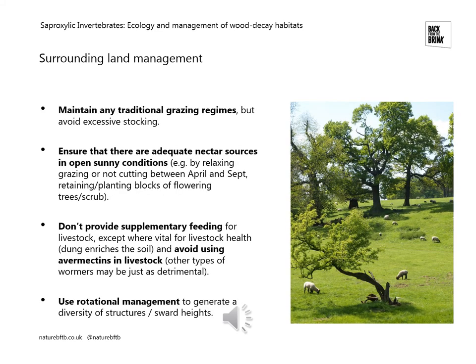Where a site has a long history of grazing — whether by sheep, cattle, or deer — we want to maintain those traditional grazing regimes, as long as they don't interfere with the floral resources available. We want to ensure pollen and nectar resources are available to saproxylic invertebrates when they need them, so we may need to reduce grazing between April and September, avoid cutting meadows during that period, or look to retain or plant up blocks of flowering trees or shrubs. We also want to avoid supplementary feeding of livestock where possible, because enriched dung can enrich the soil and interfere with fungal communities that trees depend upon. Avermectins and other wormers in livestock dung can also affect soil invertebrates, dung beetles, and other organisms.